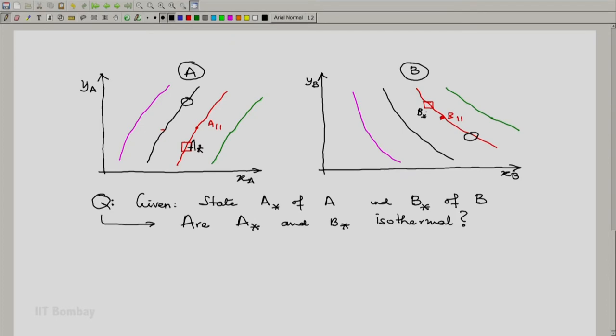However, if the two systems, one of A and one of B, do not lie on corresponding isotherms, for example,